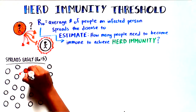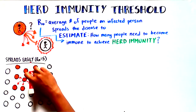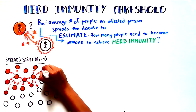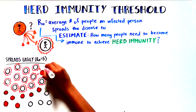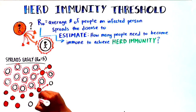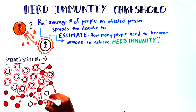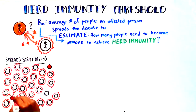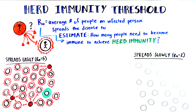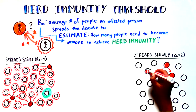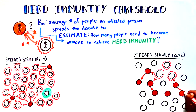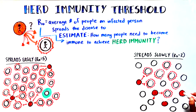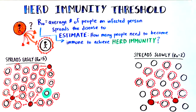Let's take a look at this visually. For a pathogen that spreads very easily or is highly communicable — say one with an R0 of 5 — many more individuals need to become immune to reach the herd immunity threshold. For a pathogen that spreads relatively more slowly, one with an R0 of 2, for example, fewer people need to develop immunity before herd immunity becomes protective.